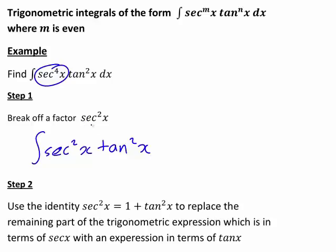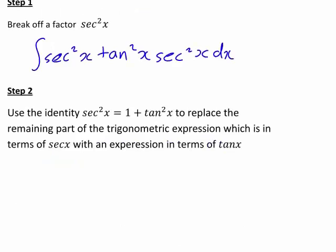I'm going to write the factor that I've broken off at the end of the expression. We then use the identity sec squared x equals 1 plus tan squared x to replace the remaining part of the trigonometric expression.